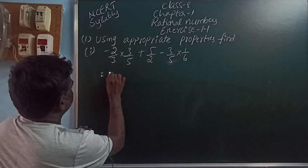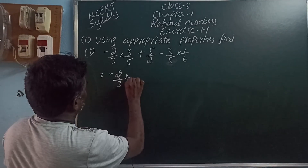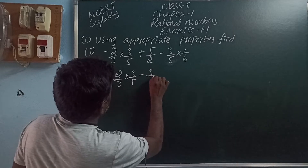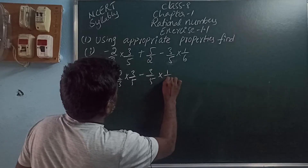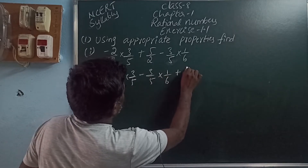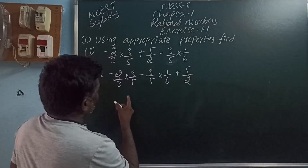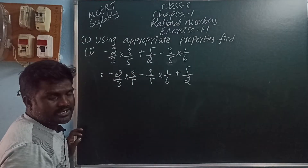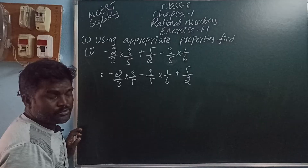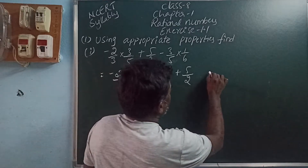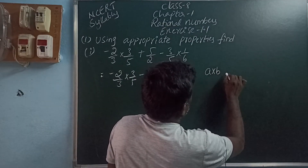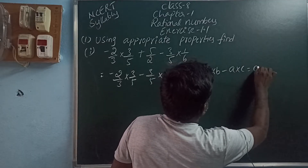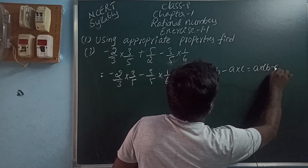The first term and last term are multiples of 3 by 5. So we can write this as minus 2 by 3 into 3 by 5 minus 3 by 5 into 1 by 6 plus 5 by 2. In these two terms the common multiple is 3 by 5. Which property can you use here? Distributive property. That is A into B minus A into C equals A into (B minus C).